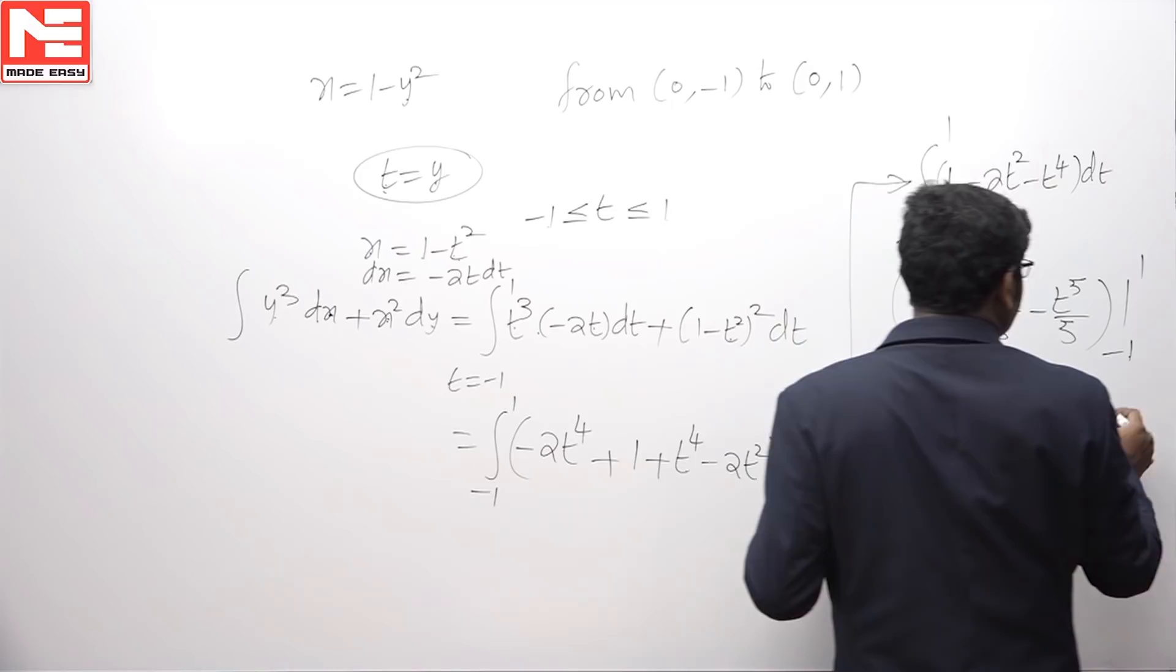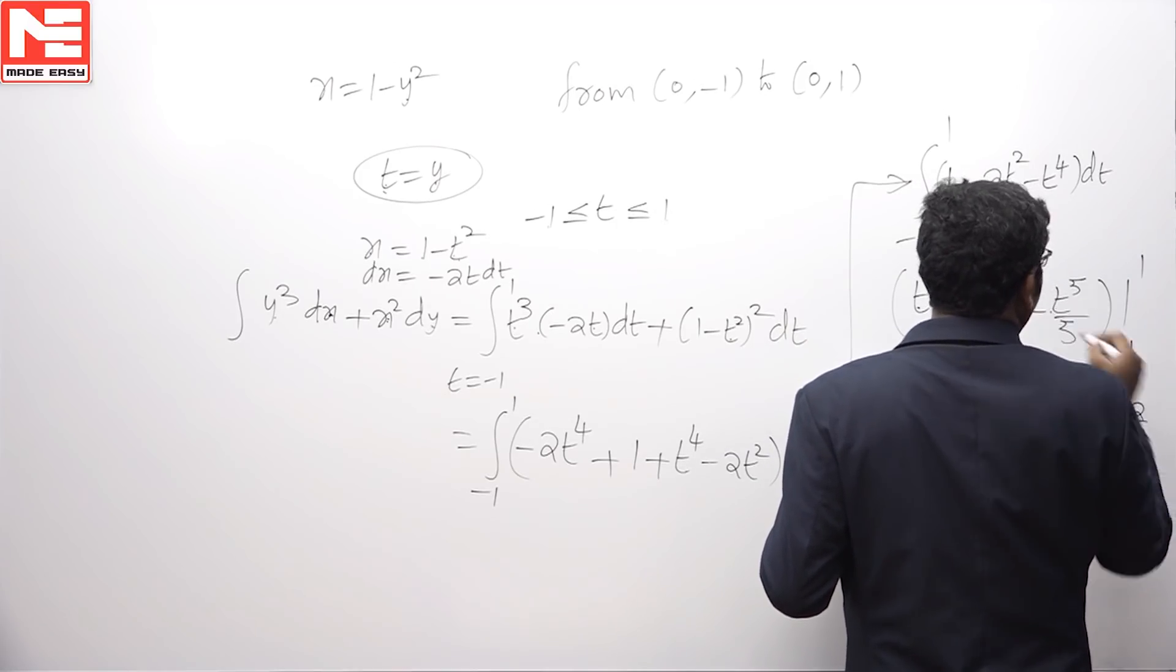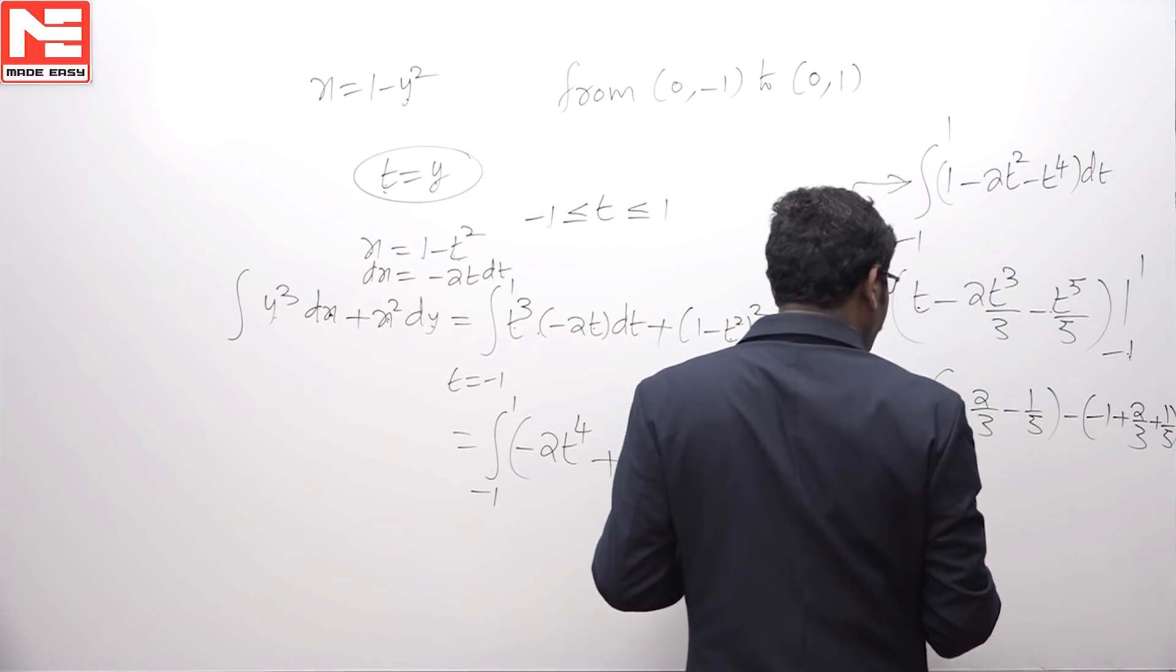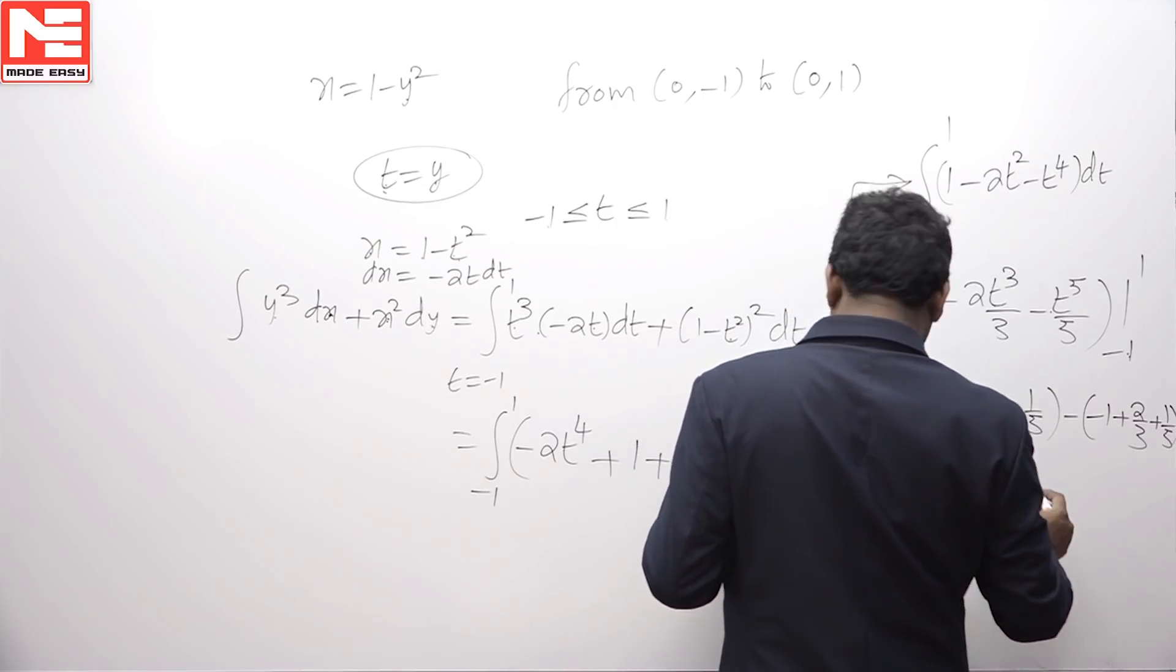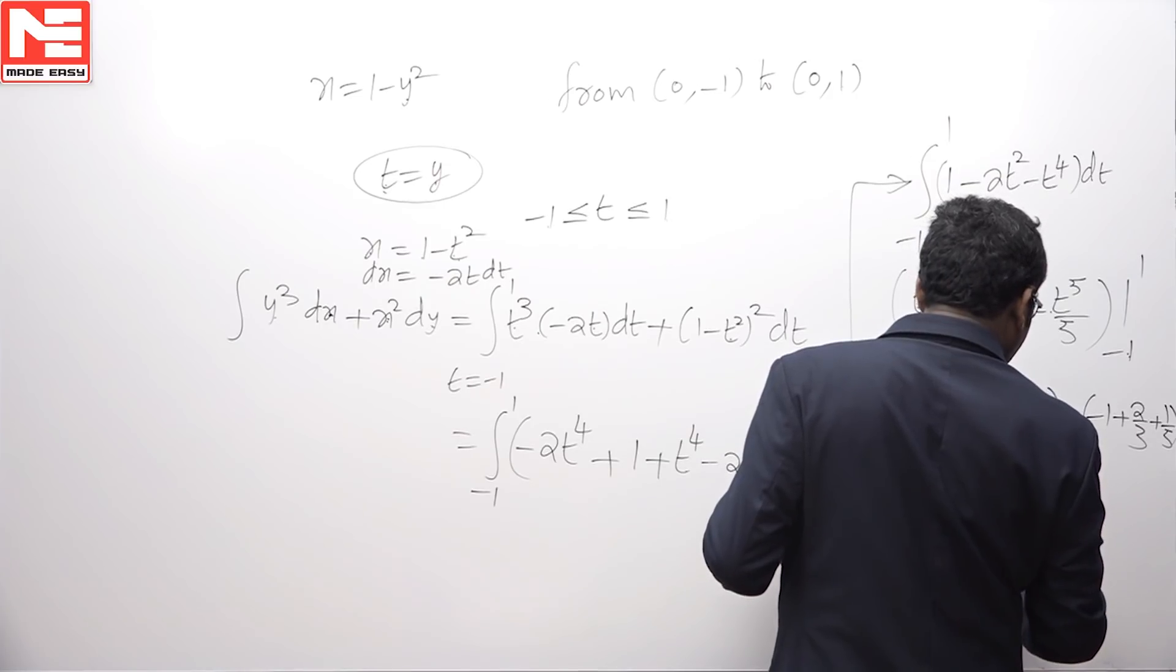(-1 + 2/3 + 1/5). Simplifying this we get 4/15, which is 0.266 or approximately 0.27.